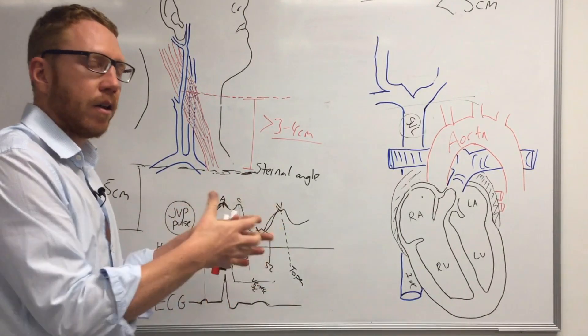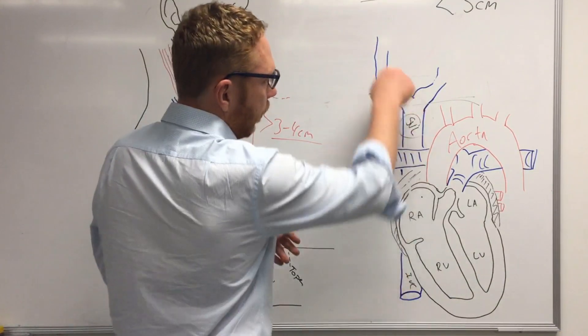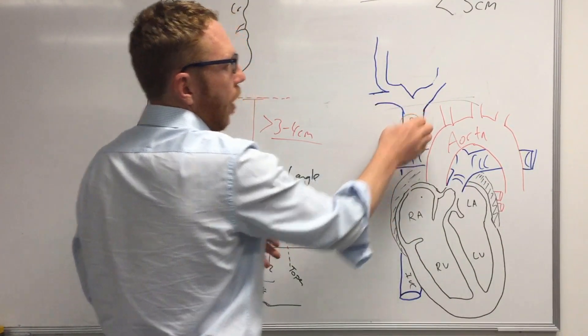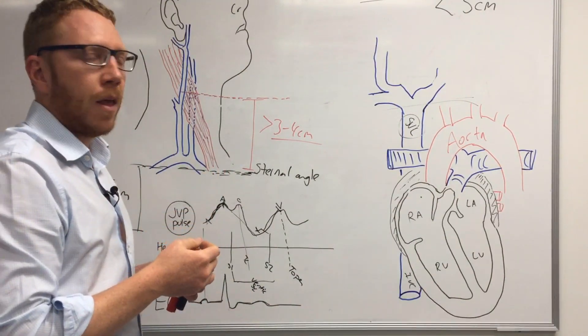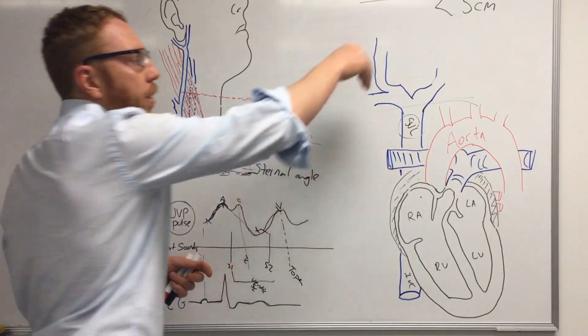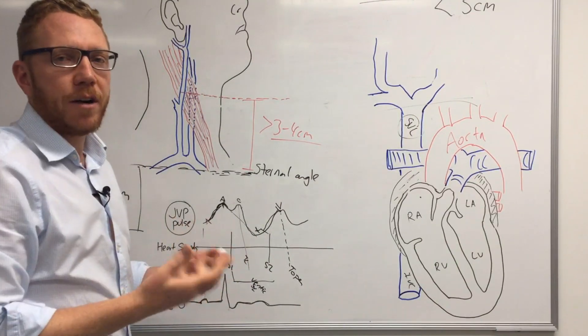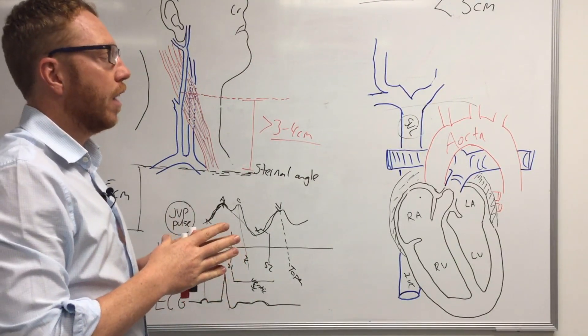So more fluid is going back. Therefore, you might get an increased JVP with an increased volume. Likewise, in the opposite, you've got a decreased JVP if you are dehydrated or got hypovolemia.